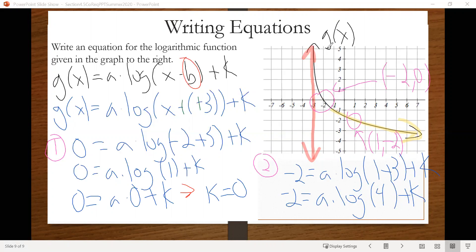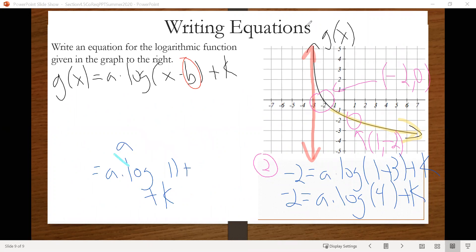Which we can now plug that in to the other equation and solve for a. So that's what we'll do now. So we'll set up the second equation here. Plug in the value for k. So what we get when we do that, it's going to be negative 2 equals a times log of 4 plus, again, the value for k is 0. But then that just becomes negative 2 equals a times log of 4.